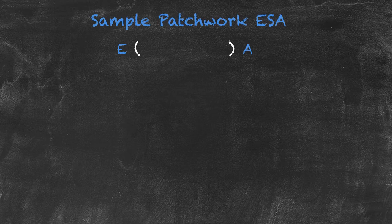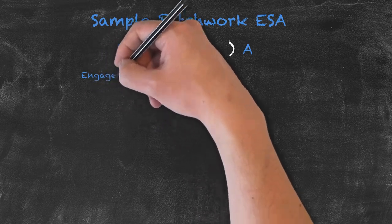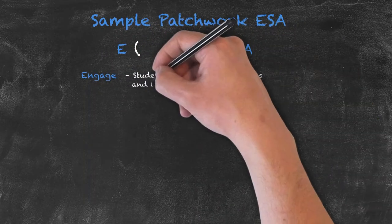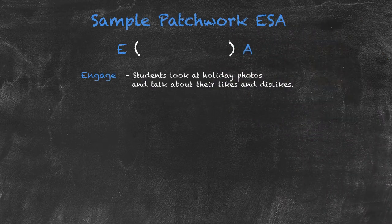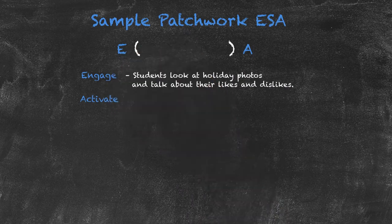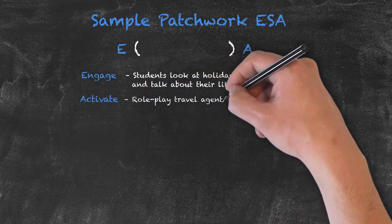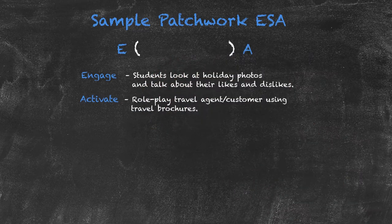Starting with the engage, the students are going to look at holiday photos and talk about what they like and don't like from what they see. From that, we're going to move directly into an activate phase, where the students are going to make comments about holiday brochures and try to act out a role play between a travel agent and a customer.